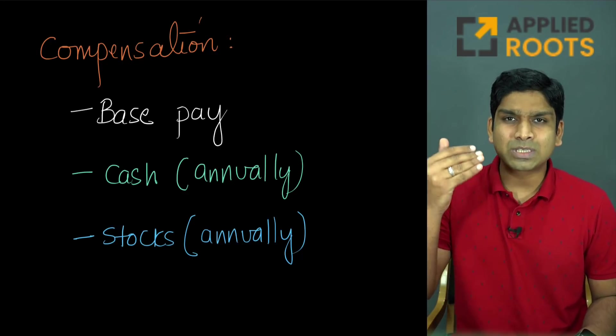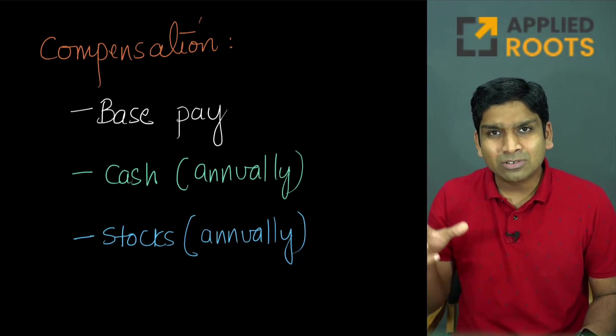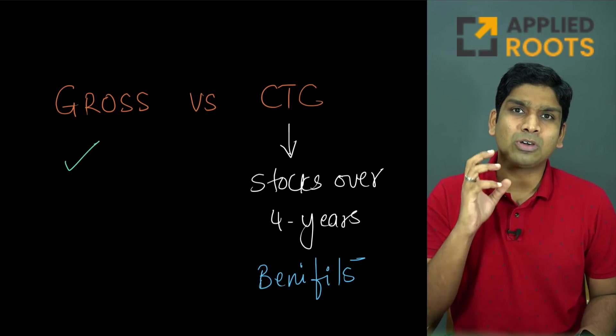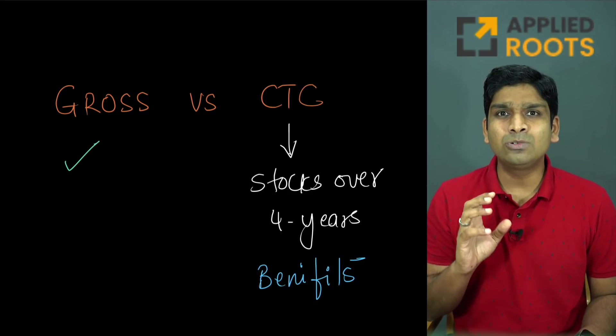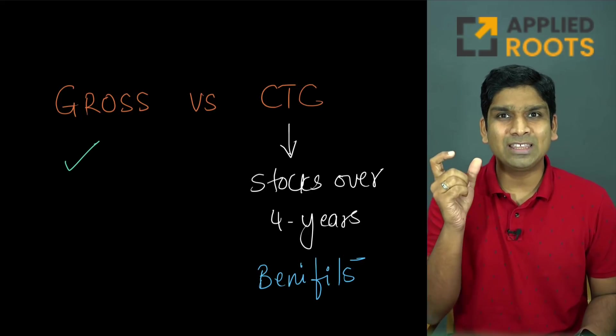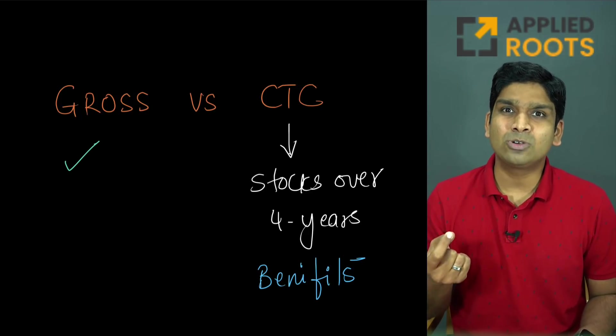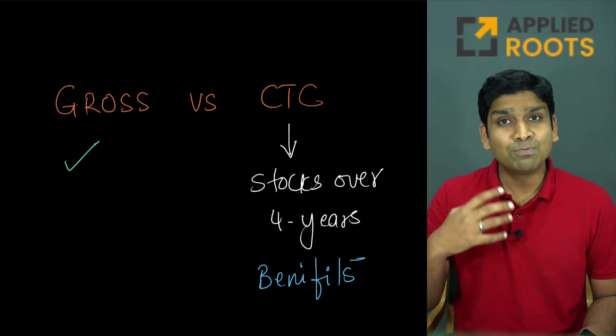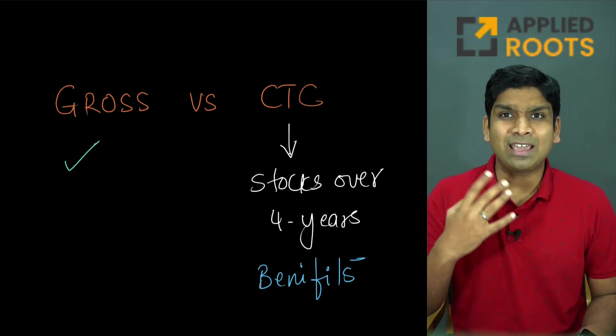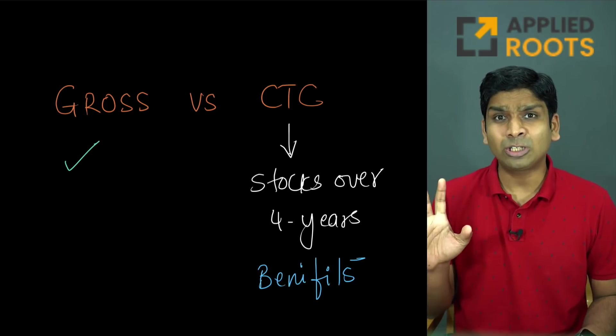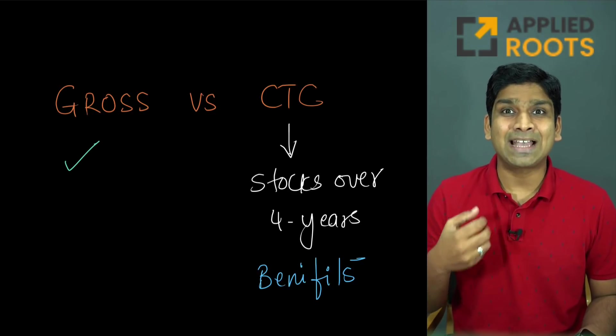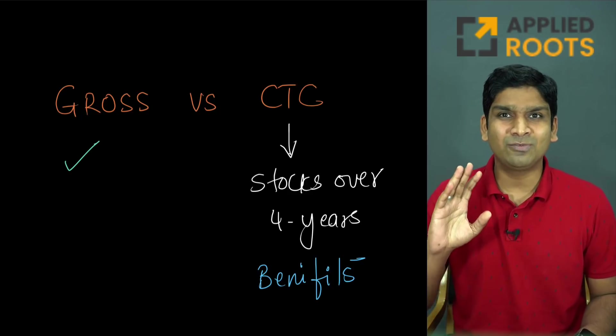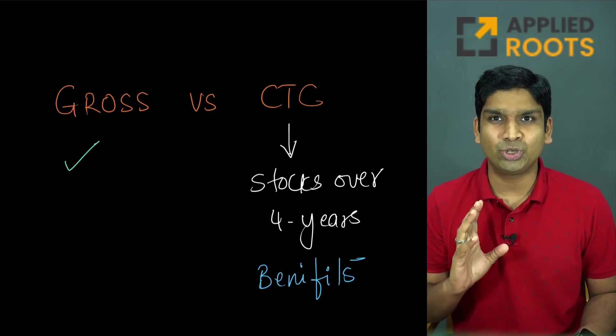So for all practical purposes the stock is equivalent to cash. We will use the stock, the cash, and the base pay—we'll take the sum of all three when we discuss these typical compensations. We will only talk about gross compensation, not CTC, because gross includes all of the compensation which can be converted to cash in the one year duration. We will not talk about CTC because these can be exaggerated since they include cash and stock components over the next four years.